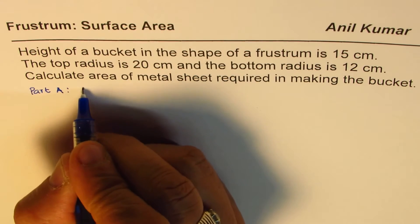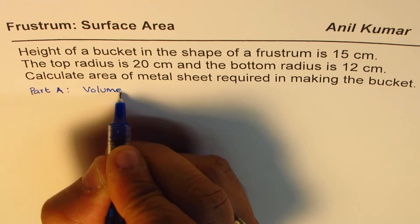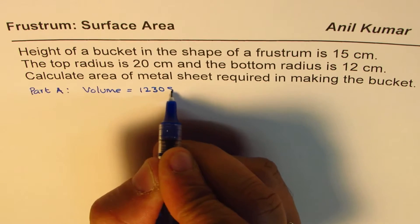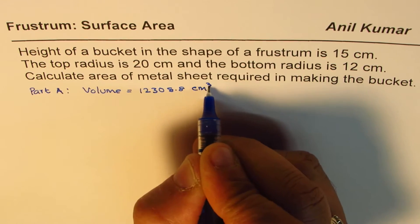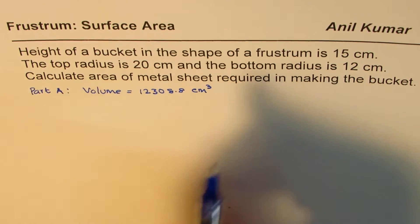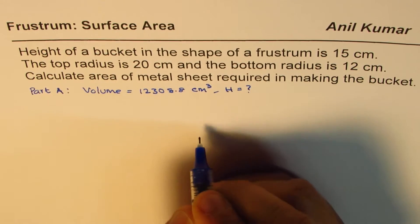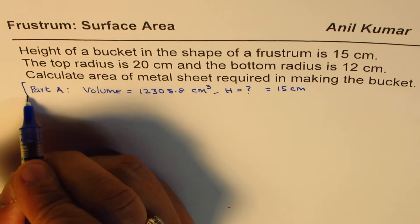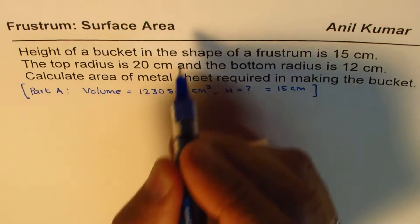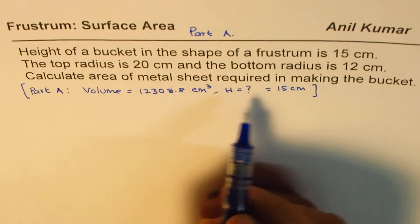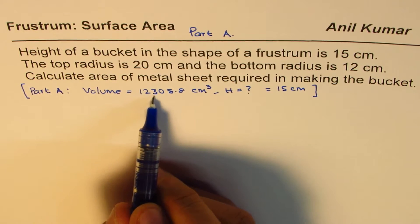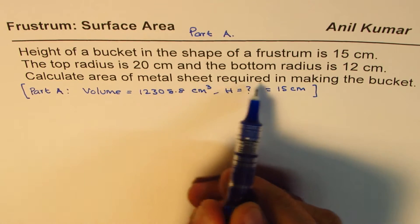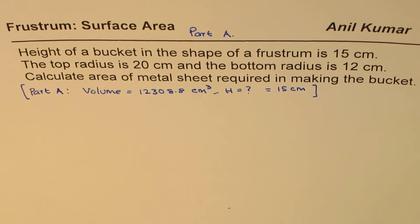In part A, we were given the volume of this bucket — the volume was 12308.8 cm³. We were given the top and bottom radius and needed to find the height. So we wanted to find the height of this bucket and we calculated it to be 15 cm. That is what we already did in part A. So let me call this part B, in which we find the area of metal sheet required to make the bucket whose volume is 12308.8 cm³.